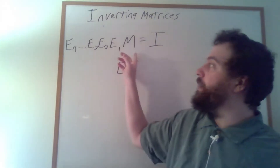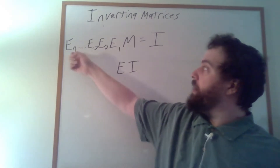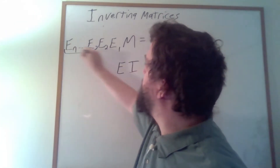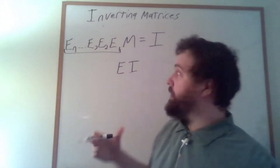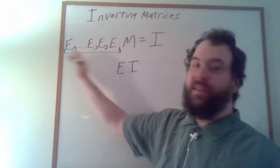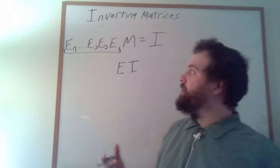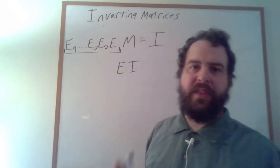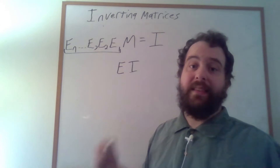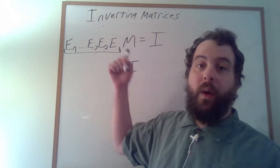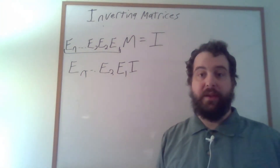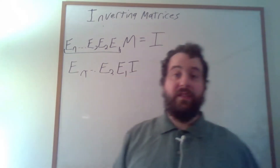So what we have here is actually a matrix product. The product of all of these elementary matrices gives us the identity matrix, and by associativity we can view this as: this product of elementary matrices times M is equal to the identity matrix. This is exactly what we're looking for — this is the inverse matrix of M. There's actually a clever trick: simply apply these elementary row operations to the identity matrix while you're applying them to M, because that calculation gives us the product of each of these elementary matrices.